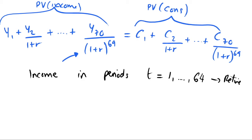So if we look in our budget constraint, this Y70 is actually now equal to zero because we don't have any income in our final period, and the same is true for Y69, Y68, Y67, and so on. We only have income in times 1 to 64.